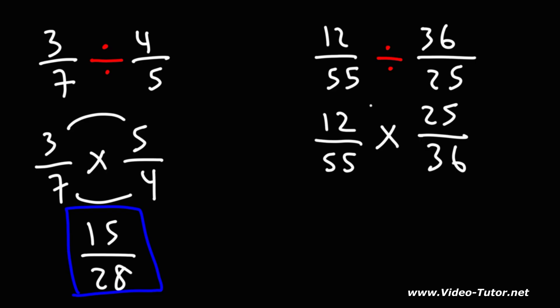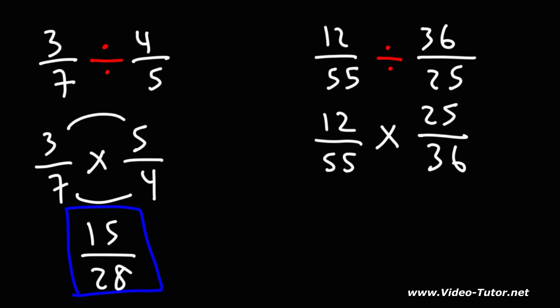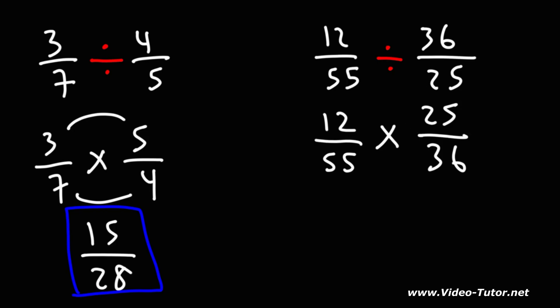Now if we multiply across 12 times 25, we're going to be dealing with some big numbers. But notice that 12 and 36 have common factors — in this case, 6 and 12. And 55 and 25 have a common factor of 5. So for this problem, you want to simplify before you multiply.